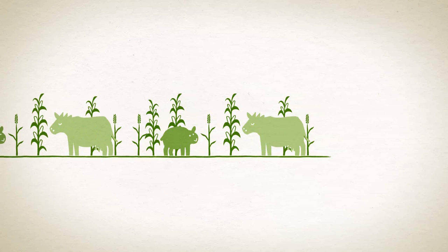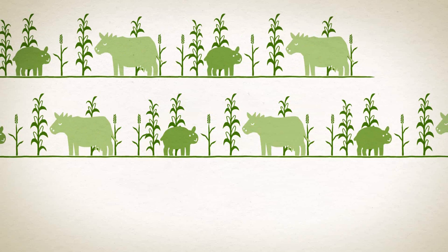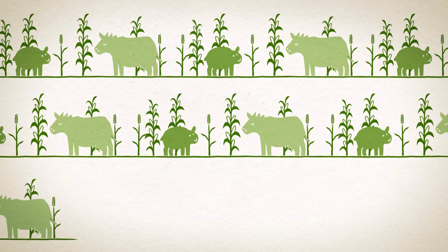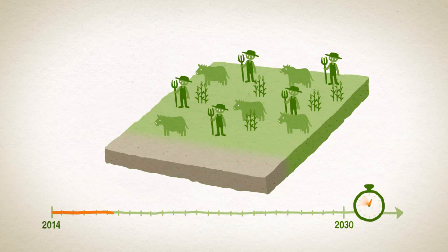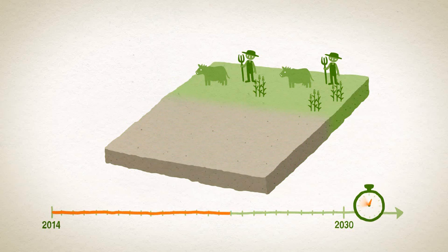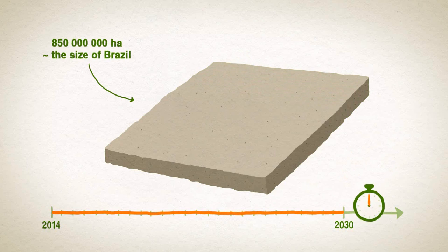Sustainable land management is a clear pathway towards securing our coming future. An estimated additional 120 million hectares of productive land will be needed to support the growth in food production required by 2030. How can we secure such land if we keep degrading it? At the speed we are degrading land today, we will, by 2030, have degraded a land area equivalent to the size of Brazil.